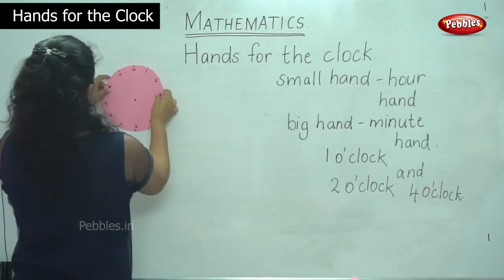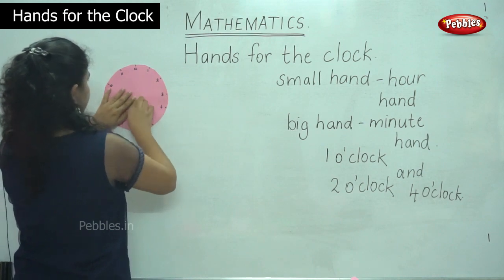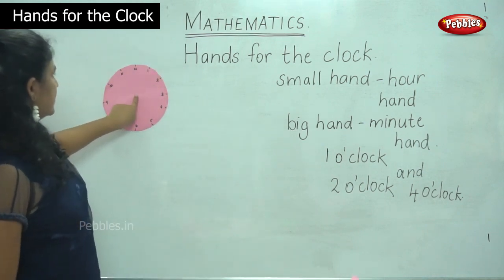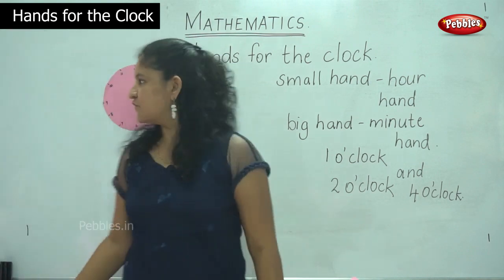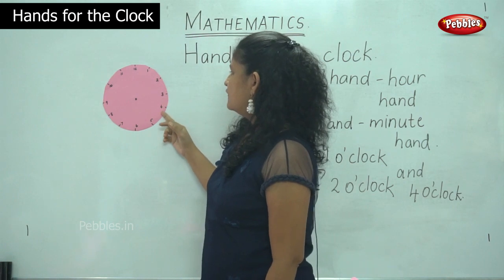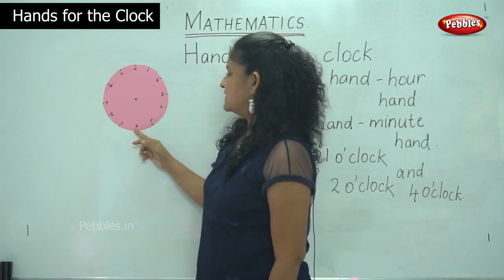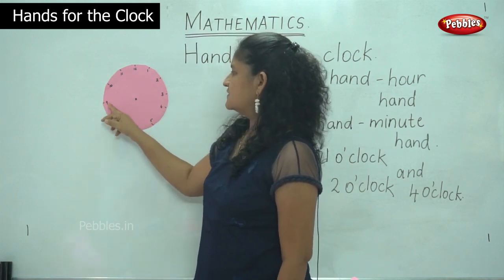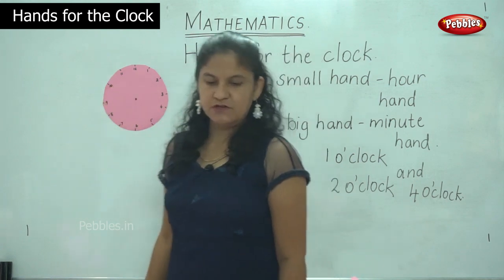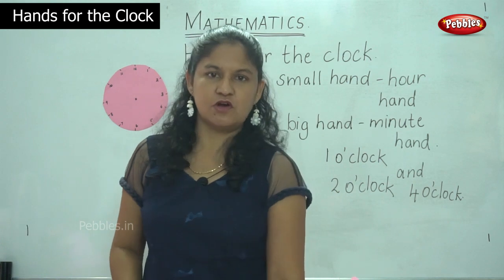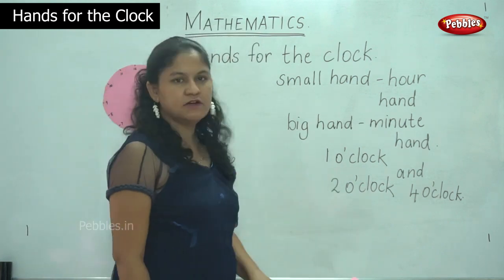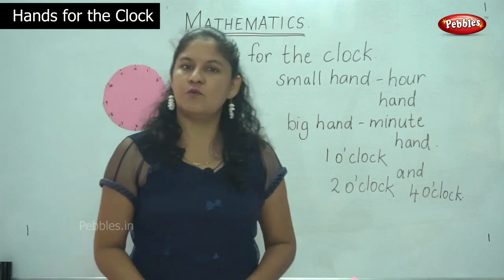So in the first clock, I have the first clock on the board and I have the numbers from 1, 2, 3, 4, 5, 6, 7, 8, 9, 10, 11 and 12. This is the small model of a clock. Are you ready children? We are going to see how to draw the timing for 1 o'clock.